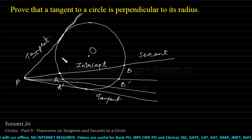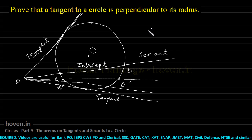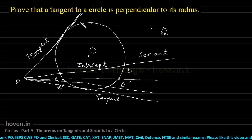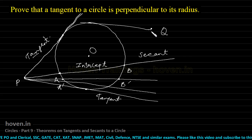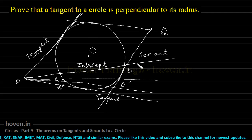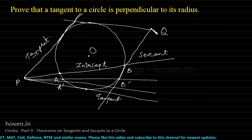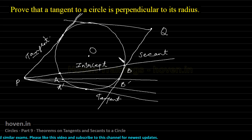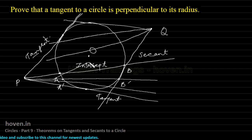Both the secant and tangent carry meaning only when the point from which they are drawn lies outside the circle. From an external point Q, I can draw one tangent like this, and one more tangent like this. So from an external point, two tangents can be drawn to a circle, but I can draw as many secants as I like — an infinite number of secants from an external point.